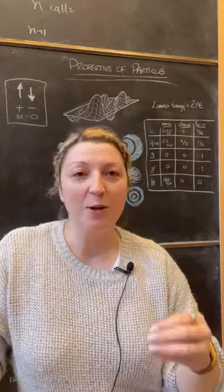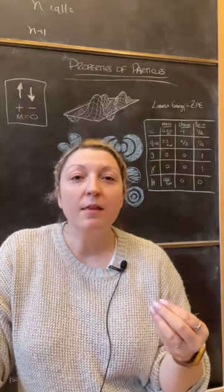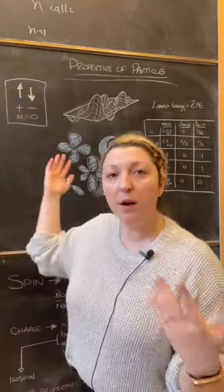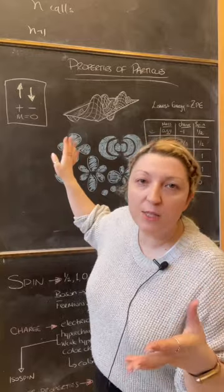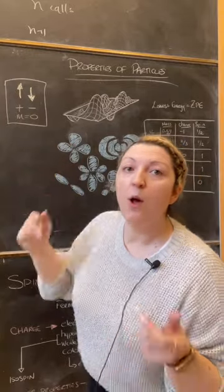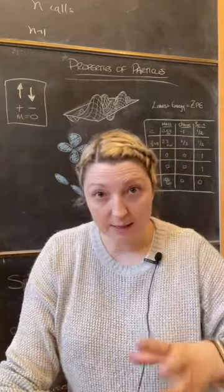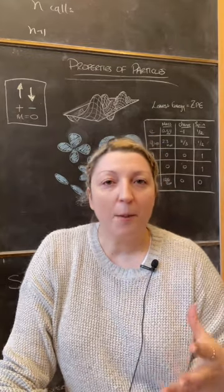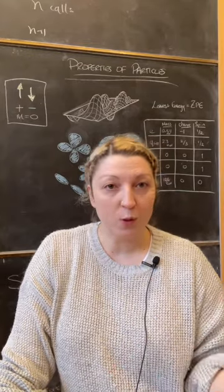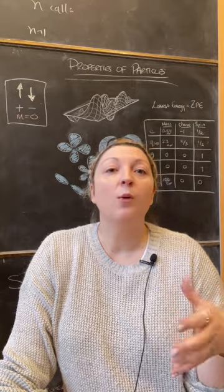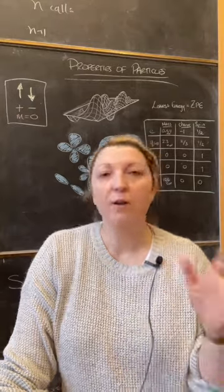When we talk about particles in quantum physics, we say things like the particle has spin-up, or it's negatively charged, it has no mass. What we're describing are properties of particles, and these properties are the way that we distinguish between them. So how we know a photon from an electron, or a quark from a gluon.